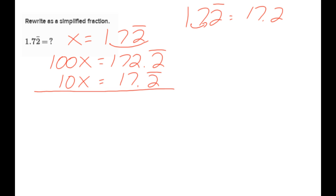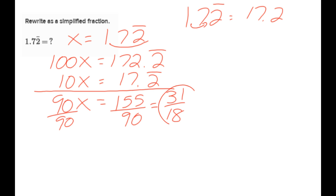Now I can subtract, and I get 90x equals 172 minus 17 is 155, divide by 90. 5 goes into both, so we'll get 31 over 18, and that will be the answer.